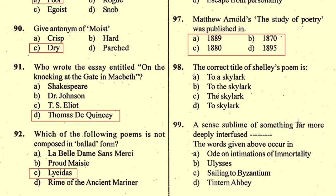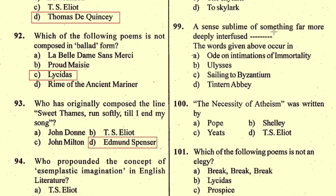Question number 98: The correct title of Shelley's poem is — the right option is A, 'To a Skylark'. Question number 99: 'A sense sublime of something far more deeply interfused' — these words occur in — these lines occur in the poem 'Lines Composed a Few Miles above Tintern Abbey' by William Wordsworth. The right option is D, Tintern Abbey.